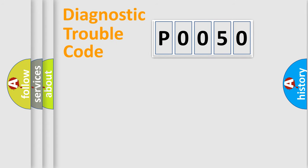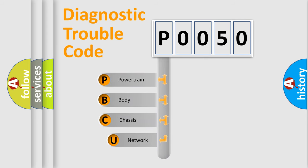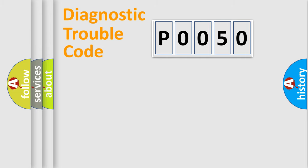Let's do this. First, let's look at the history of diagnostic fault code composition according to the OBD2 protocol, which is unified for all automakers since 2000. We divide the electric system of the automobile into four basic units: Powertrain, Body, Chassis, and Network.